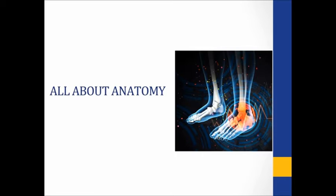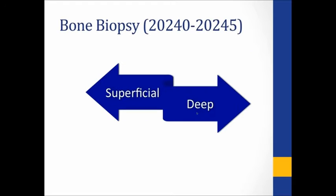To illustrate that point, you have your code book in front of you — turn to 20240 and 20245. These two codes have subtle changes; they are revised codes, not new codes. Bone biopsy has been around for a long time, and the toggle switch is between superficial and deep. This year they embedded more descriptive terms for what constitutes superficial versus deep, because an AMA committee found that deep codes were being used inappropriately when the documentation didn't support deep. So they've added more structures.